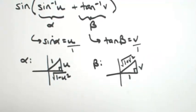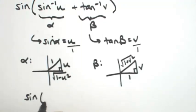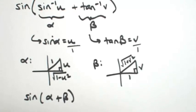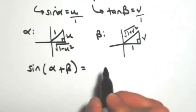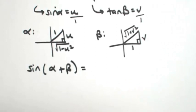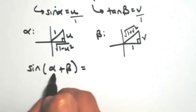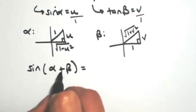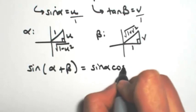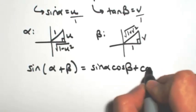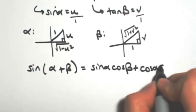Now that I have my triangles with all the sides filled in, I'm going to rewrite this problem as the sine of alpha plus beta, and then expand that out using the sum formula for sine: sine alpha cosine beta plus cosine alpha sine beta.